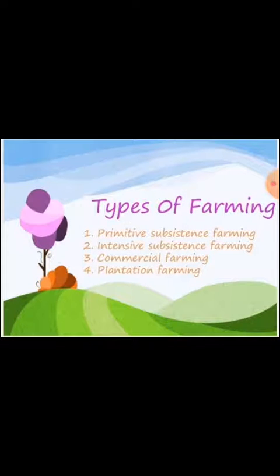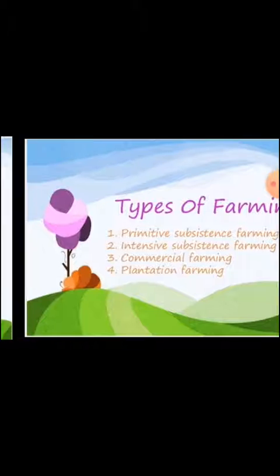Types of farming can be divided into four parts: primitive subsistence farming, intensive subsistence farming, commercial farming, and plantation farming.